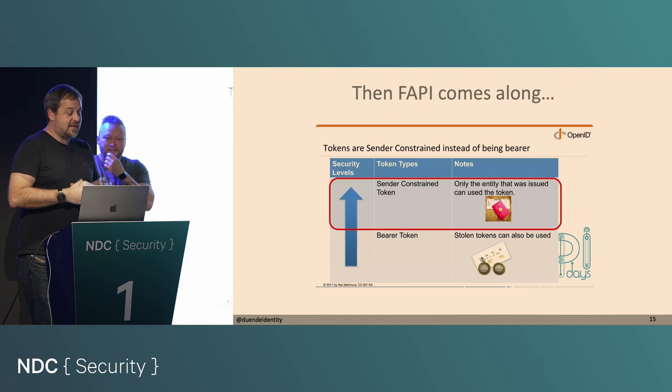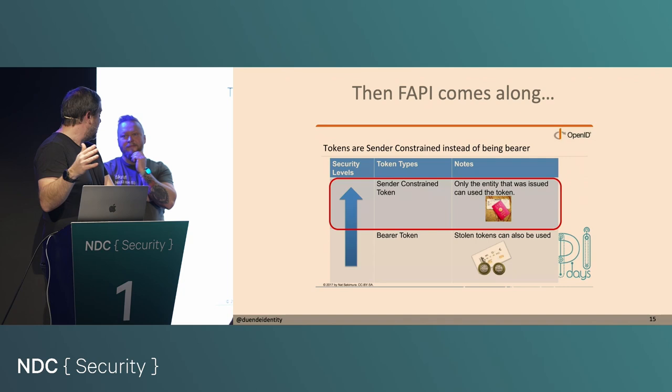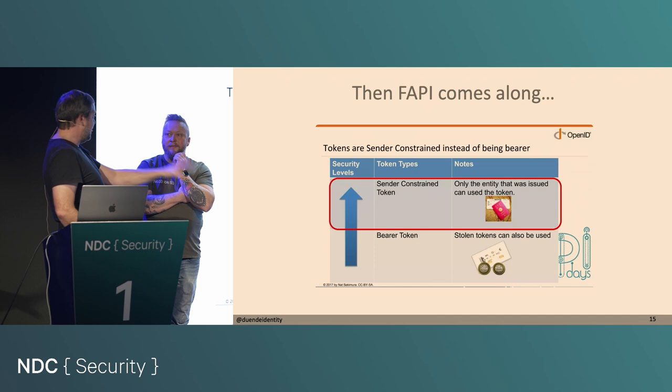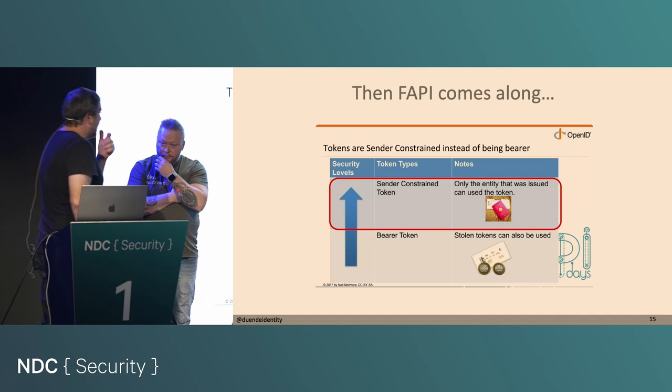I have many customers, even in the not-so-critical space, who have ten-minute access tokens for exactly the same reason — they want to mitigate the risk when tokens leak. Especially if they install software on untrusted networks like customer networks where they don't control reverse proxies, firewalls, or logging, and it's not end-to-end encrypted. Mobile applications have the same problem.